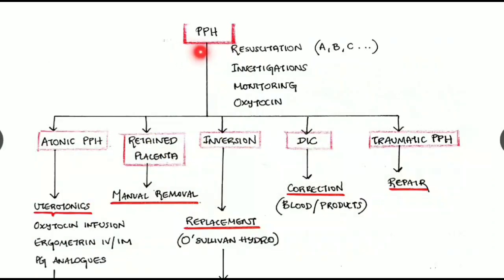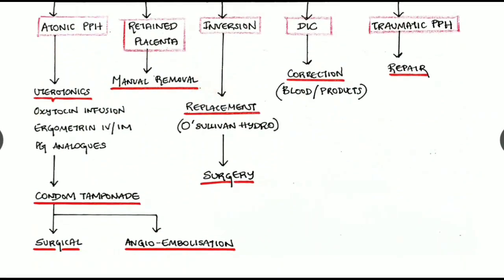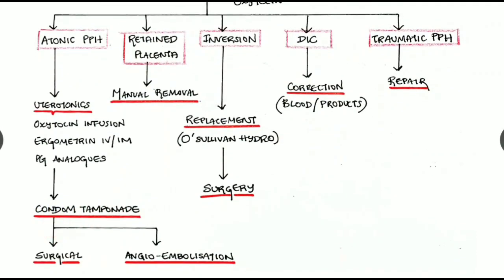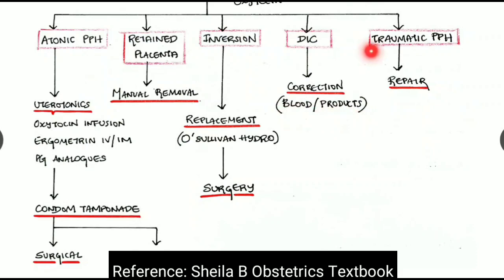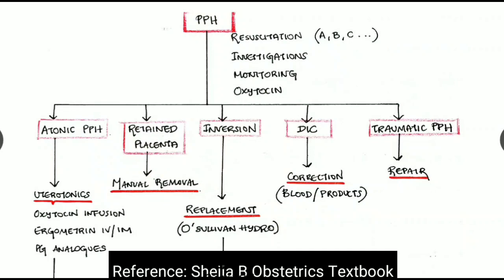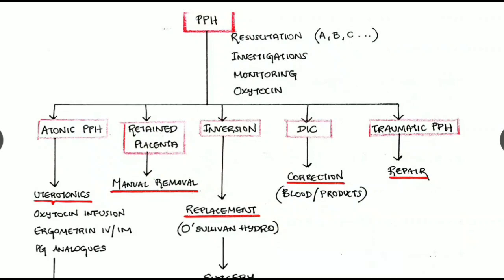The management flowchart for PPH: initially resuscitate with airway, breathing, and circulation; send investigations; monitor the patient and give oxytocin infusion. For atonic PPH: give uterotonics (oxytocin infusion, ergometrine IV or IM, prostaglandin analogues); if still bleeding, go for Bakri tamponade; if still bleeding, surgical methods or angiographic embolization. For retained placenta: manually remove it. For uterine inversion: O'Sullivan's hydrostatic replacement, or surgery if needed. For DIC: correct with blood or blood products. For traumatic PPH: repair the injury.